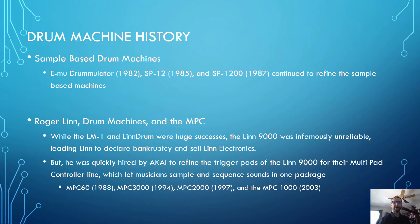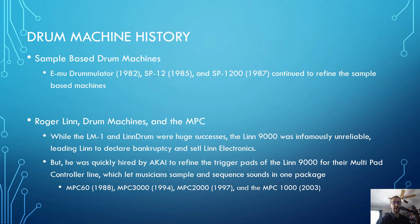Roger Linn is very important because in addition to his work with drum machines, he's also famous for his connection to the MPC, or multi-pad controller. The LM-1 and the Linn Drum were huge successes, but the Linn 9000 was infamously unreliable, difficult to program, and had terribly written software — a mess in the studio and in performance. That unfortunately led Linn to declare bankruptcy and sell off Linn Electronics. But he was very quickly hired by Akai to refine the trigger pad design of the Linn 9000 for their MPC line, which let musicians sample and sequence sounds in one package.